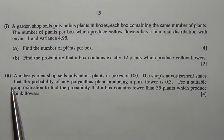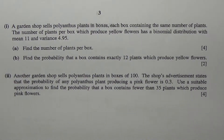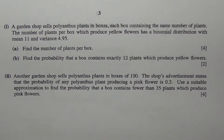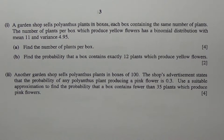For the second part, another garden shop sells polyanthous plants in boxes of 100. The shop's advertisement states that the probability of any polyanthous plant producing a pink flower is 0.3. Use a suitable approximation to find the probability that a box contains fewer than 35 plants which produce pink flowers — 4 marks.